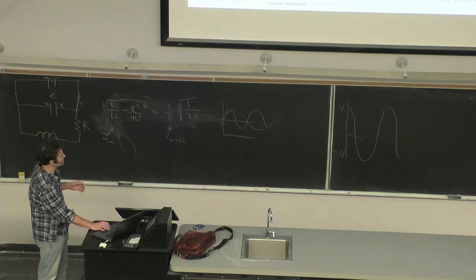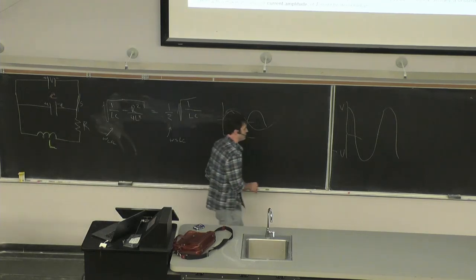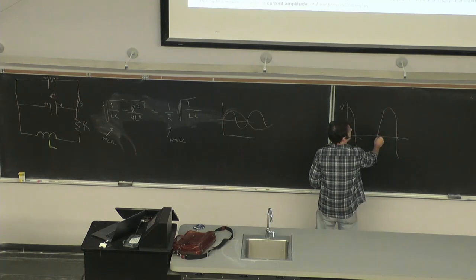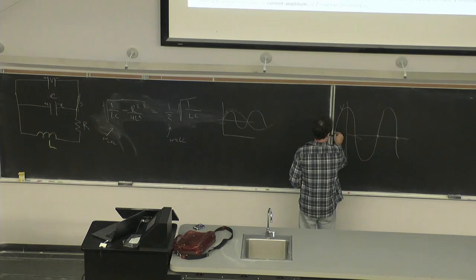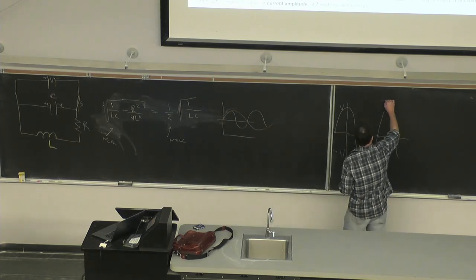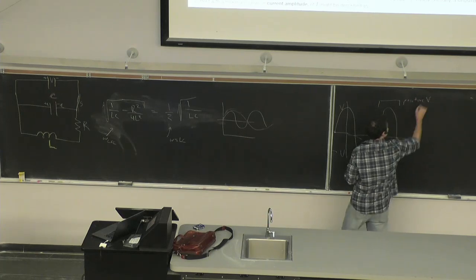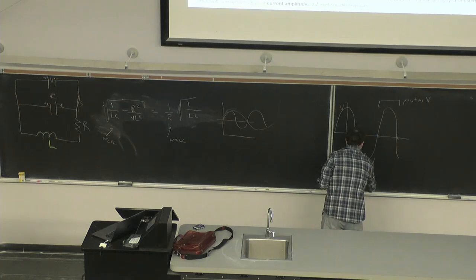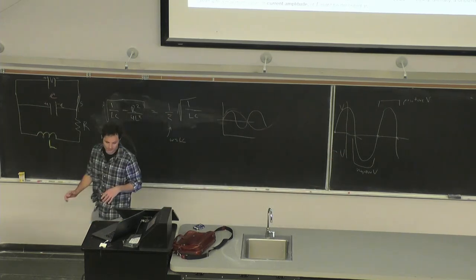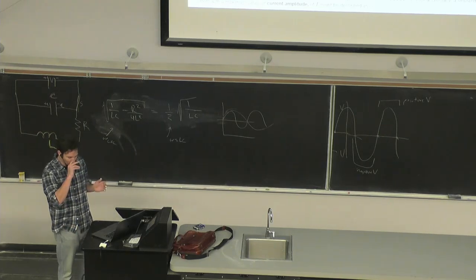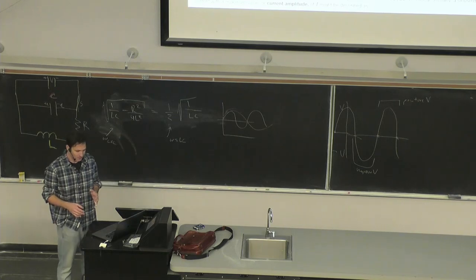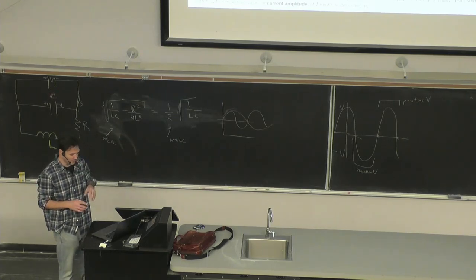The oscillating voltage has a positive voltage for part of the oscillation and a negative voltage for another part. In the United States and Canada, commercial electric power distribution systems use a frequency of 60 hertz, corresponding to an omega of 377 radians per second. In much of the rest of the world, they use 50 hertz, or 314 radians per second.